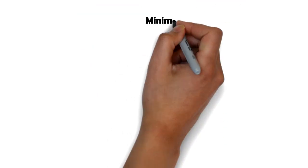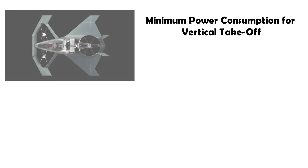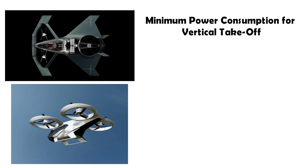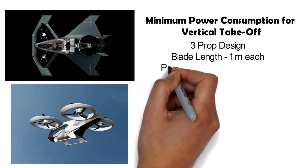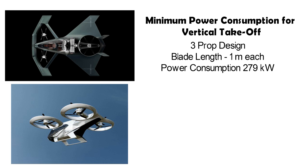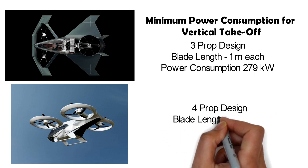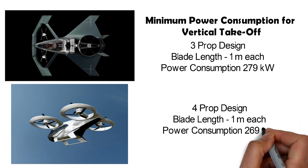Using the same spreadsheet we have done some calculations already. There were two designs that were found to have minimal power consumption. The first design was the one with three propellers with a blade diameter of one meter. This design will consume approximately 279 kilowatts for vertical takeoff. The second design was with four fans or four propellers, again of one meter blade diameter. This will require slightly lesser power for liftoff, which is 269 kilowatts.